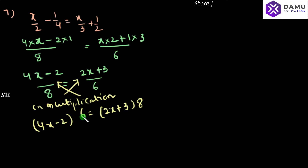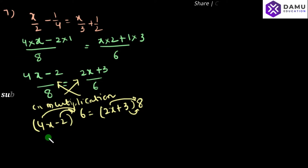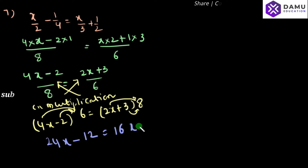So, 4x into 6. First we have to multiply 4x with 6, then 2 with 6, then 2x with 8, and 3 with 8. So, 4 into 6 is 24x minus 6 into 2 is 12, will be equal to 2 into 8 is 16x plus 3 into 8 is 24.